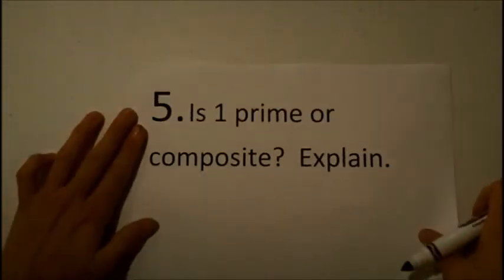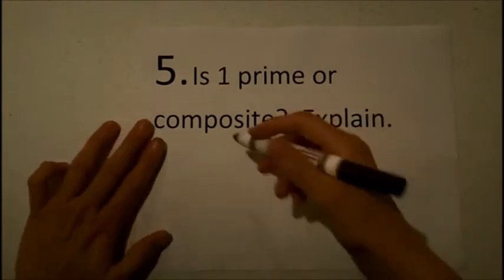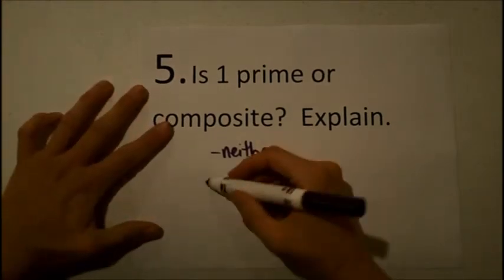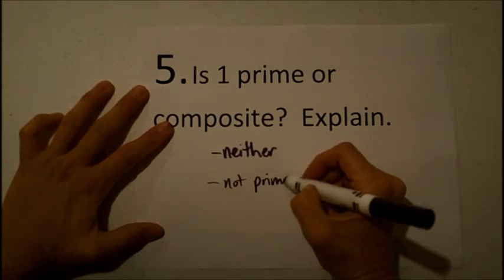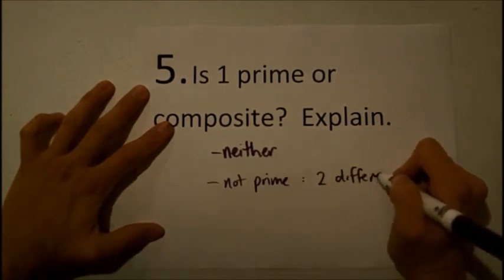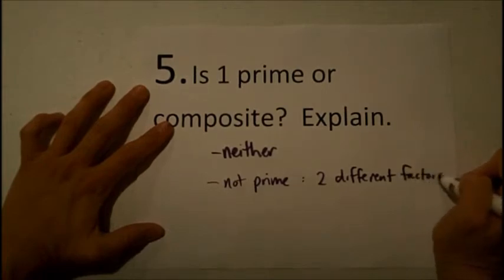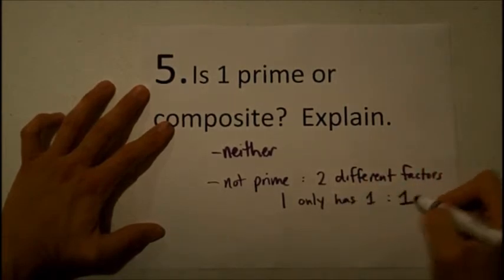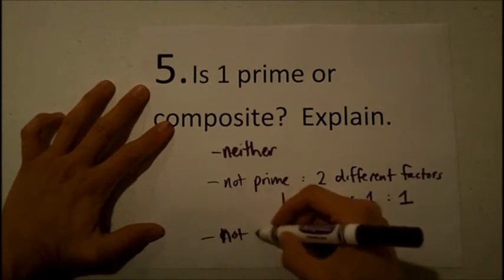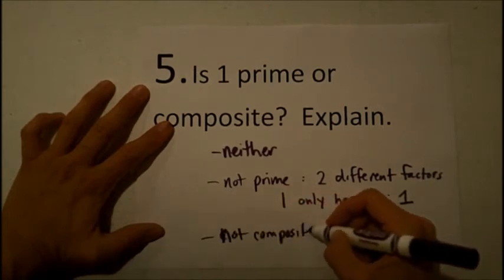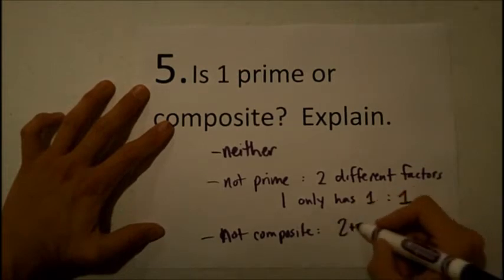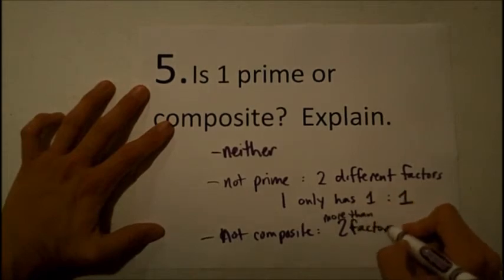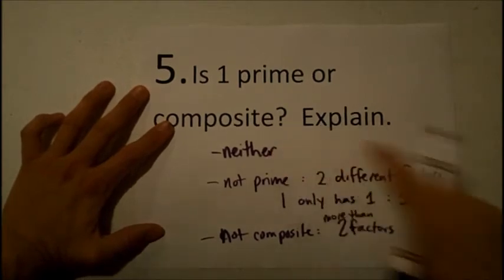Number 5 said, is 1 prime or composite explained? Well, the right answer is neither. And the reason that 1 is not prime is because prime numbers have to have two different factors. The number 1 and itself. Well, 1 only has 1. And the only factor of 1 is 1. It's not composite because it has to have more than two factors. And we've just said that it only has 1, so that makes it neither prime nor composite.